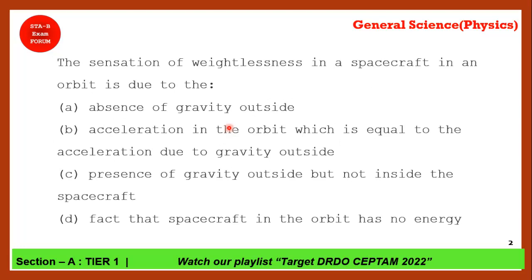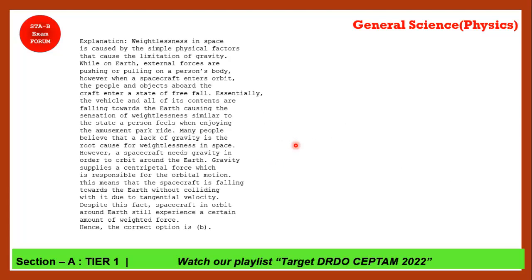The sensation of weightlessness in a spacecraft in orbit is due to which of the following? The wrong interpretation is absence of gravity outside. Weightlessness is never associated with absence of gravity. What actually happens is that the acceleration in the orbit is equal to the acceleration due to gravity outside. Option B is the correct answer.